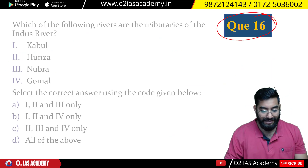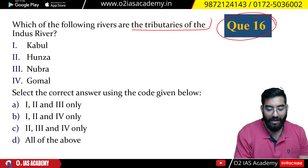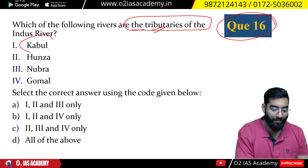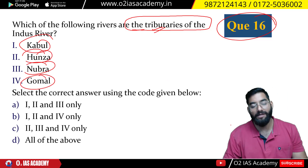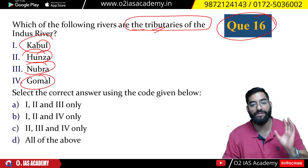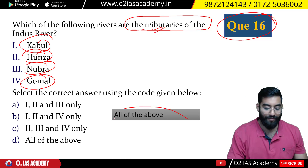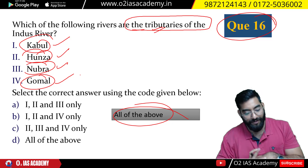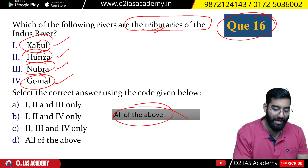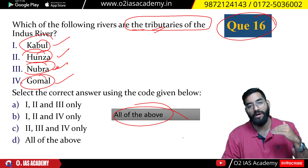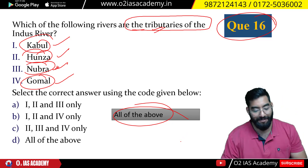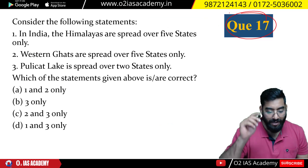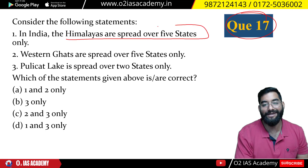Question number 16: Consider the following rivers and identify which are tributaries of the Indus — Kabul, Hunza, Nubra, and Gilgit. The correct answer is all of the above — Kabul, Hunza, Nubra, and Gilgit are all tributaries of the Indus. Except for Nubra, the remaining tributaries flow in from outside India.